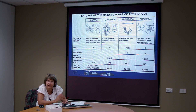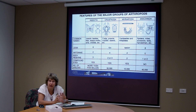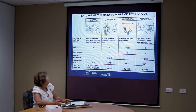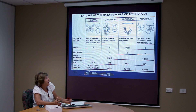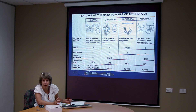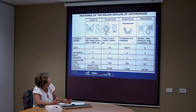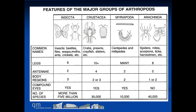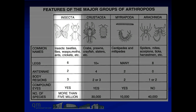An arthropod is something that has an exoskeleton — it's basically got its hard parts on the outside and the squishy bits in the middle. There are four major groups of arthropods, as you can see here. Insects have six legs, two antennae, and three body regions.